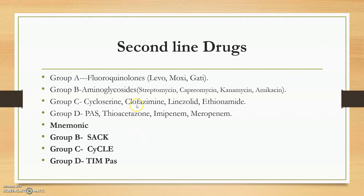For Group C, you have to remember CYCLE — C-Y-C-L-E — for cycloserine. For Group D, the mnemonic is TYMPAS — T for thiacetazone, I for imipenem, M for meropenem, and PAS for para-aminosalicylic acid. So the codes are: SACK, CYCLE, TYMPAS.